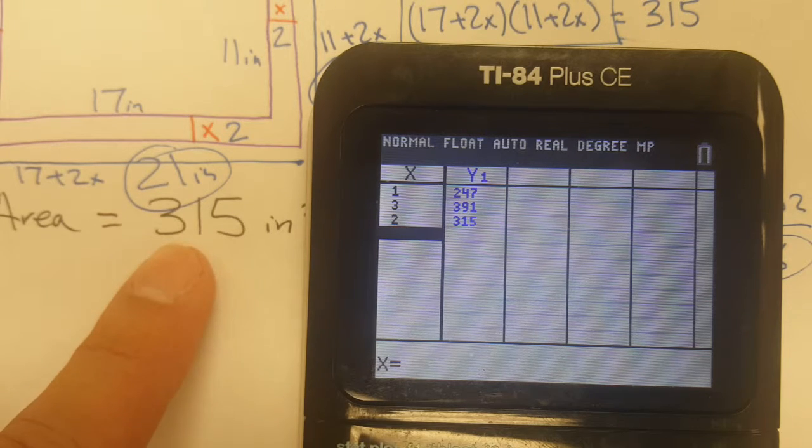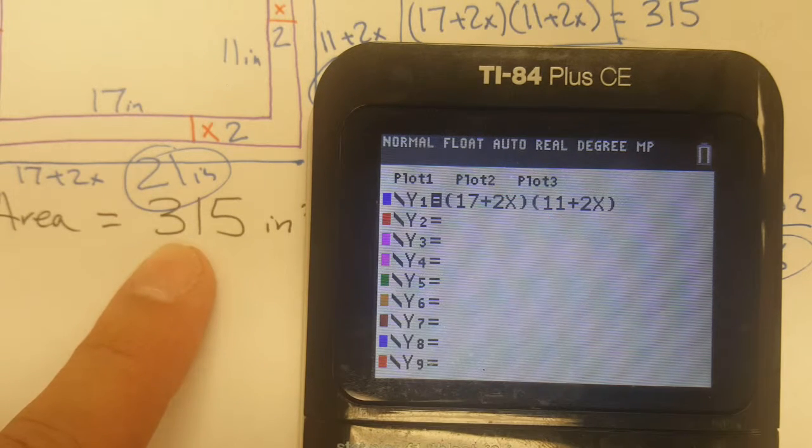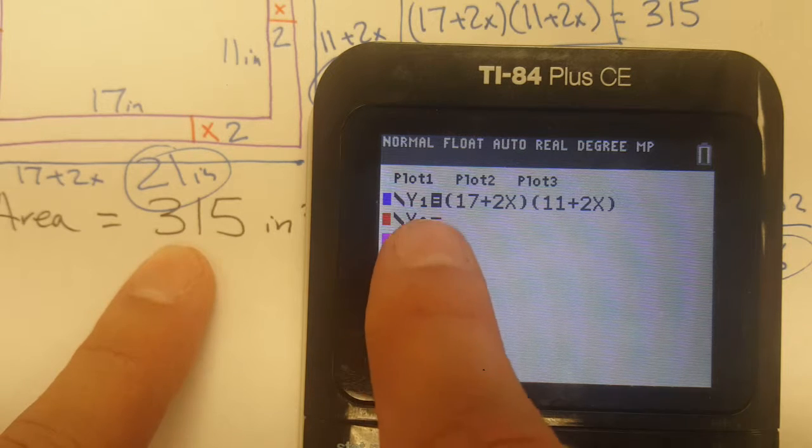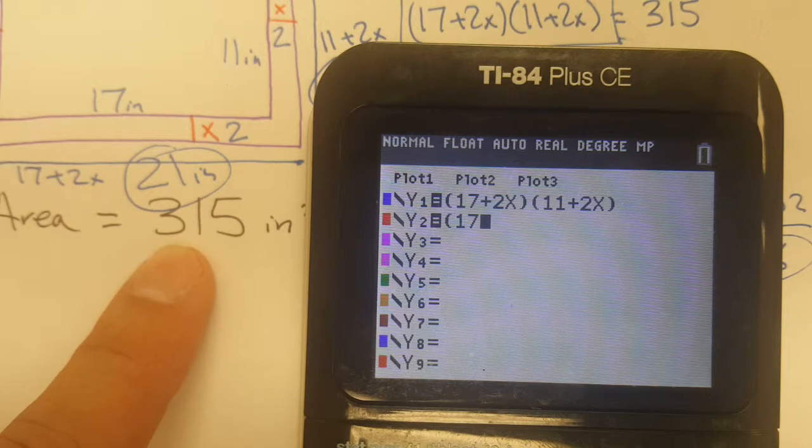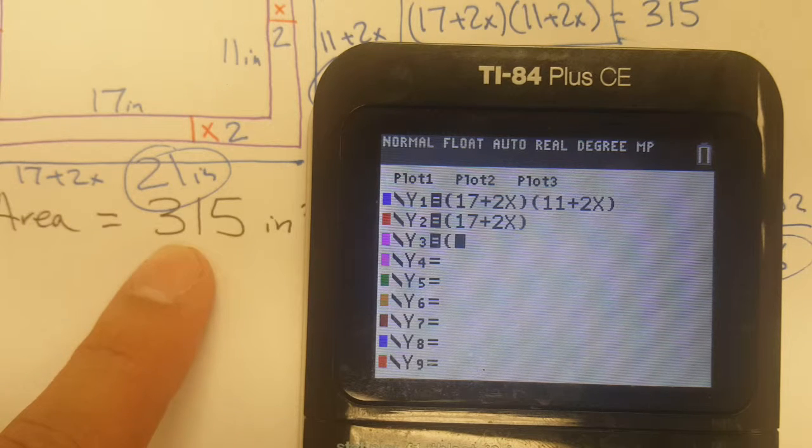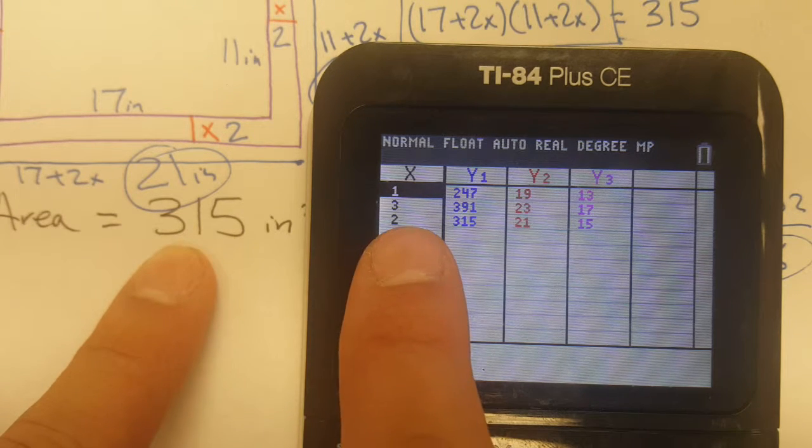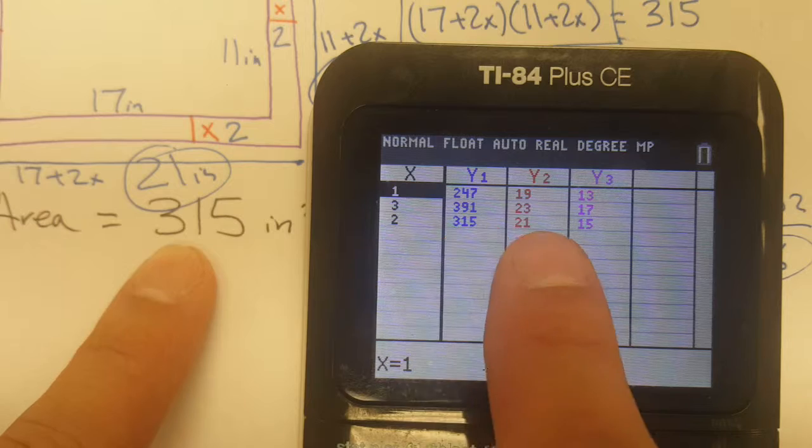If you want to take this one step further, watch this. Here's the area. On y2 and y3, I'm actually going to type the individual length and the width or the height. Those things are always interchangeable.